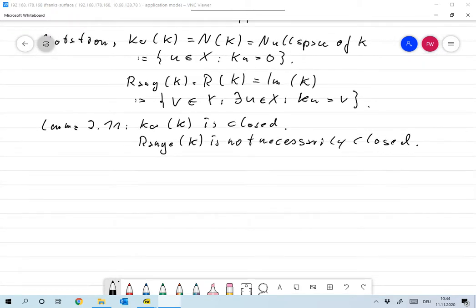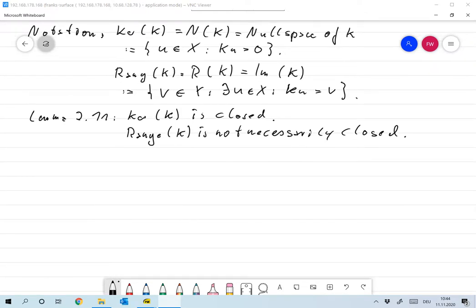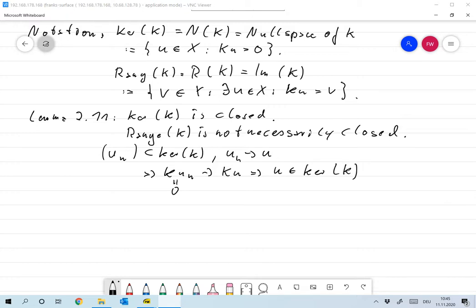And the proof is simple. Let un be some sequence in the kernel of K. Let un converge to some u. Then we have that K un converges to Ku since K is continuous, but these are all zero. So Ku is equal to zero as well. So we have that u is in the kernel of K, which means that it's closed.